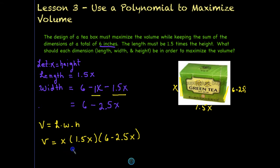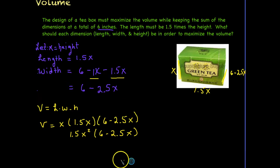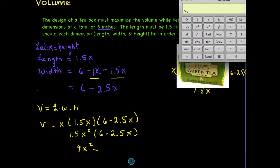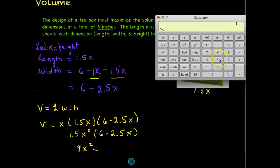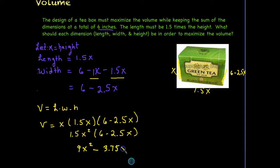So we would multiply x times 1.5x to get 1.5x squared. And then we would want to distribute that into the parentheses in order to get our final polynomial. So if we distribute that, 1.5 times 6 is going to be 9x squared. And then 1.5 times 2.5 is going to be 3.75. That's 3.75x cubed. And there is our polynomial.